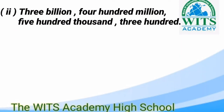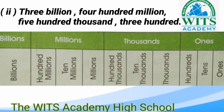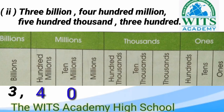Now I will solve point number 2: 3,400,500,300. ये भी हमें figures में write करना है। वही तरीका use करेंगे — पहले classes और portions बनाएंगे। यहाँ class value chart बनाया हुआ है। Left side से write करते हैं: पहला है 3 billion — 3 को billions के portion में write करेंगे। उसके बाद comma लगाएंगे। 400 million है तो hundred millions के portion में 4 लिखेंगे। 10 millions और millions नहीं हैं तो उनकी place पर 0 लिखेंगे।